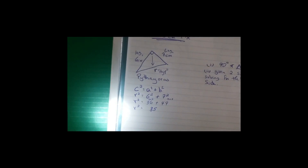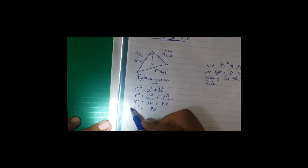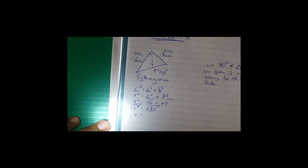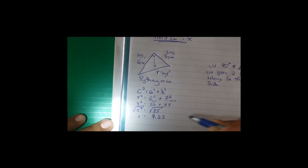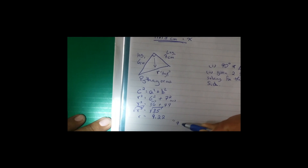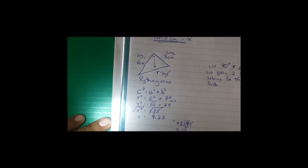Now we have to get rid of the square, so we square root both sides. The square and square root cancel off, leaving R = √85. Square root of 85 gives us 9.2195. Because the digit after the second decimal place was 9, which is bigger than 5, we round up to 9.22.